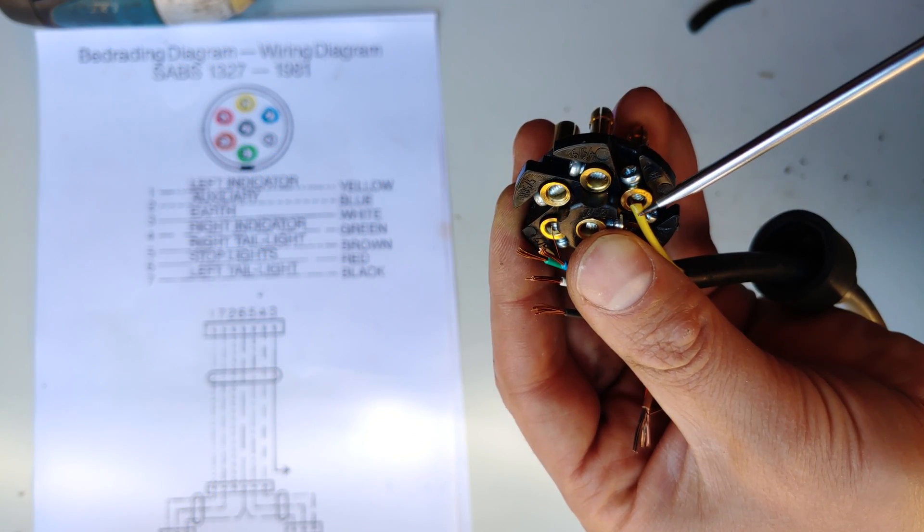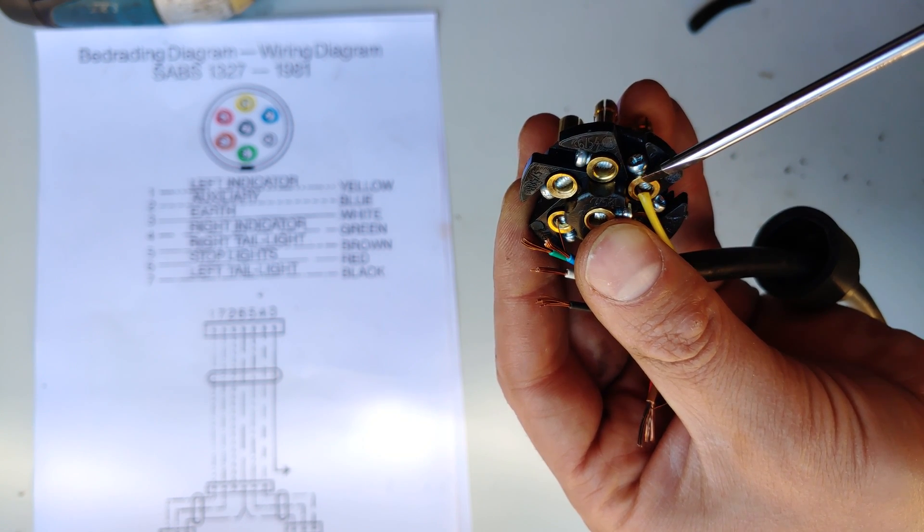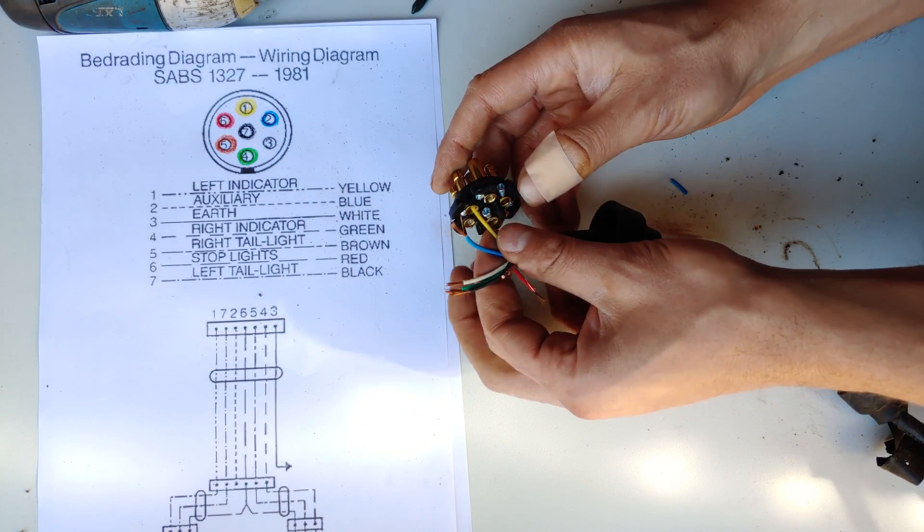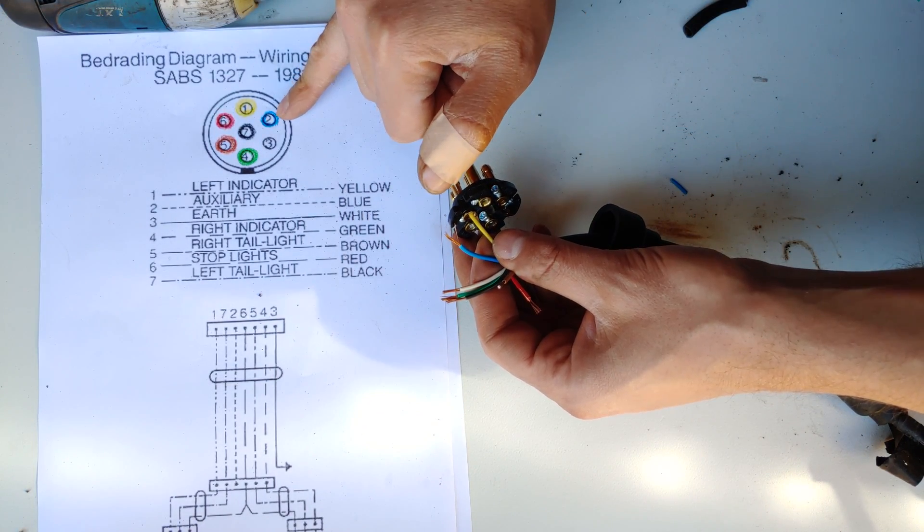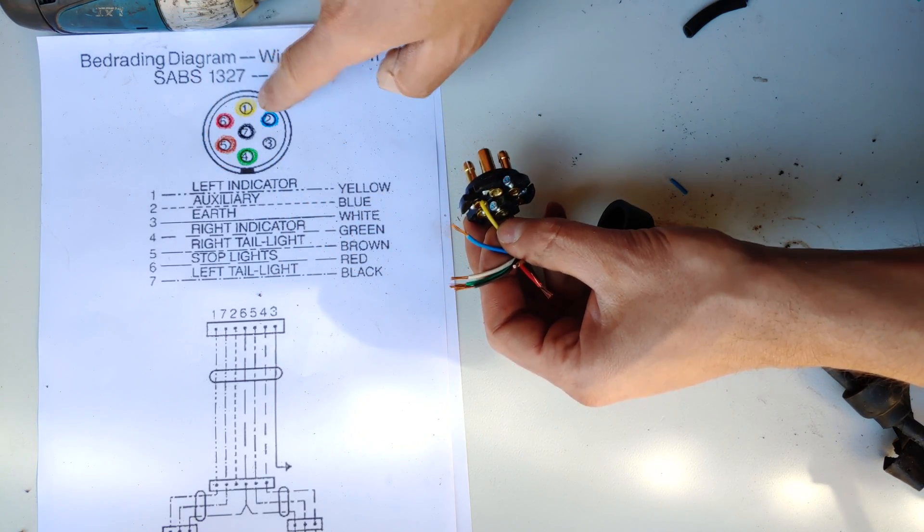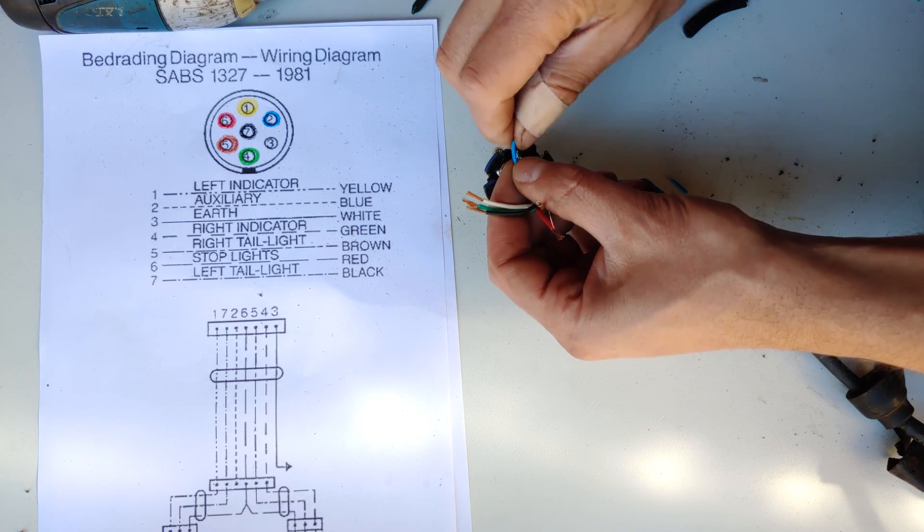If you look closely, you'll see you tighten on the wire, not the jacket. The jacket ends just before the screw, which must tighten onto the wire itself. The yellow is done. Now we go to the blue. These do have descriptions—the yellow was the left indicator, the blue happens to be an auxiliary wire.